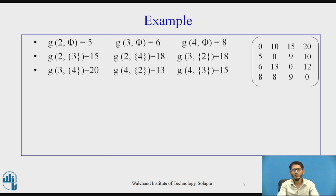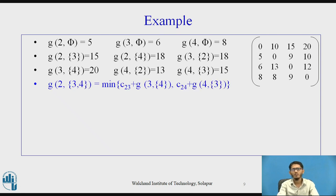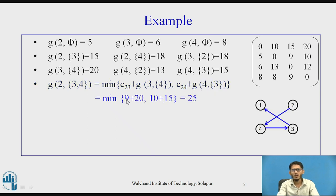These are the values calculated so far. Now we go for |S| = 2, meaning S consists of 2 vertices. We calculate g(2, {3,4}) = minimum of [c_23 + g(3, {4}), c_24 + g(4, {3})] = minimum of [9 + 20, 10 + 15] = 25. This value of 25 comes from c_24 + g(4, {3}), representing the path from vertex 2 to 4, then 4 to 3, and finally 3 to 1.